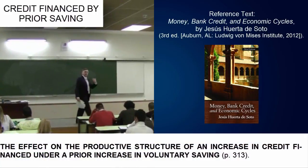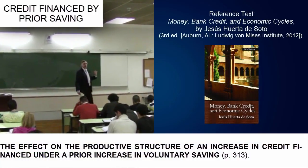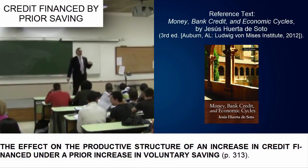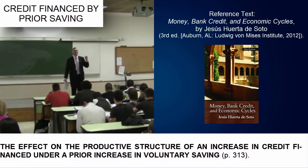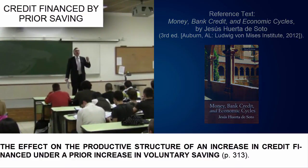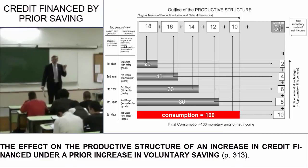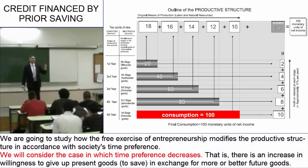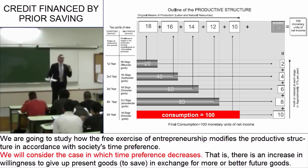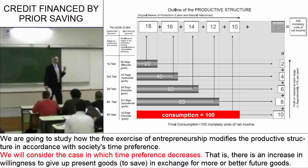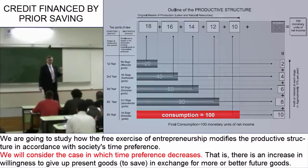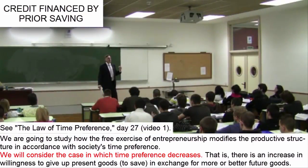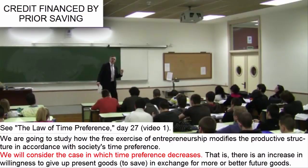In the outline of the productive structure we have just looked at, how much did economic agents, as consumers and entrepreneurs, spend on consumer goods? 100 monetary units. Let us suppose that suddenly, out of the blue, everyone's time preference decreases — the intensity with which everyone values the present over the future decreases in relative terms.